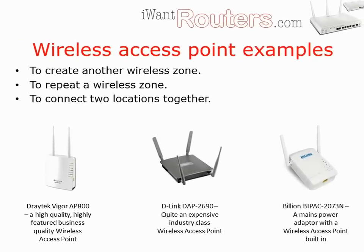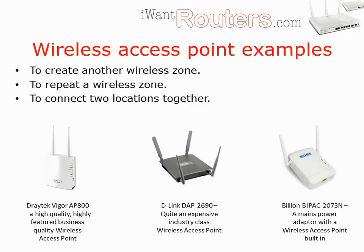Here are three examples of wireless access points. The Draytek AP800 is a highly featured business class wireless access point. There is also an AP700 version aimed at domestic and small business situations and is reasonably priced. D-Link have many wireless access points and the DAP2690 is more of a heavyweight, designed for businesses right up to enterprise level. The Billion 2073N is a great way of extending a network using a mains electricity circuit, and this one has a wireless access point built into it — great for home situations or small businesses.